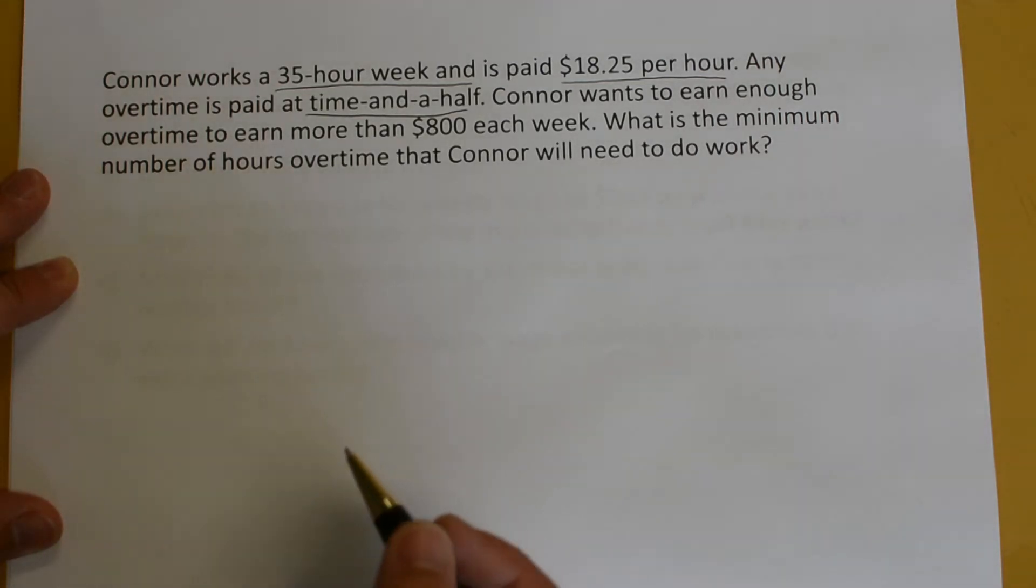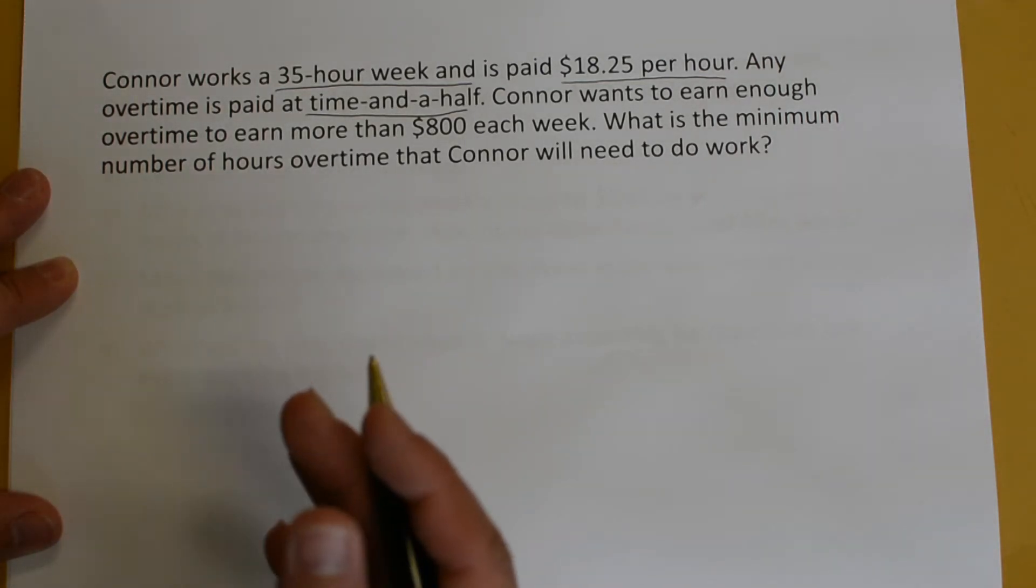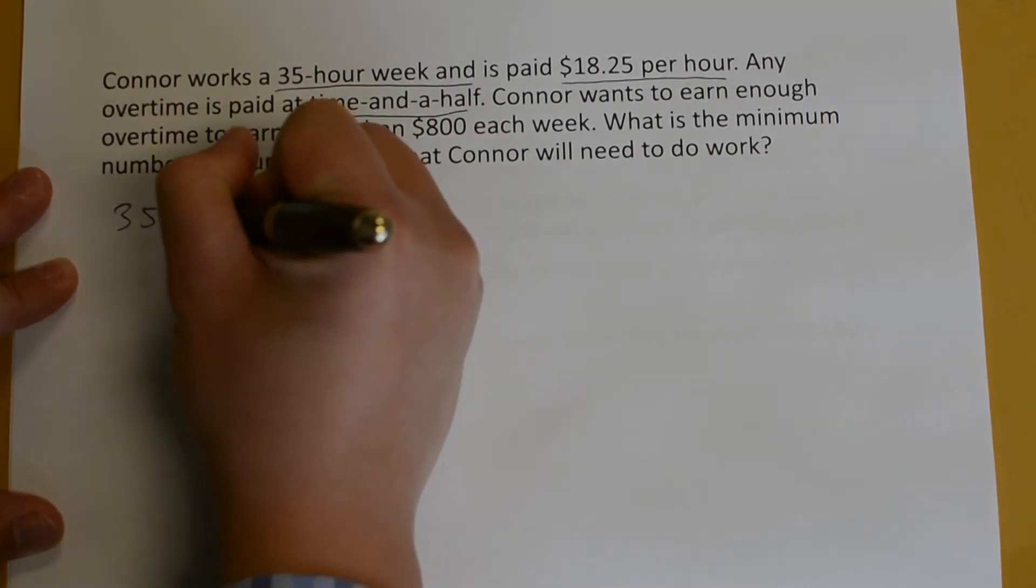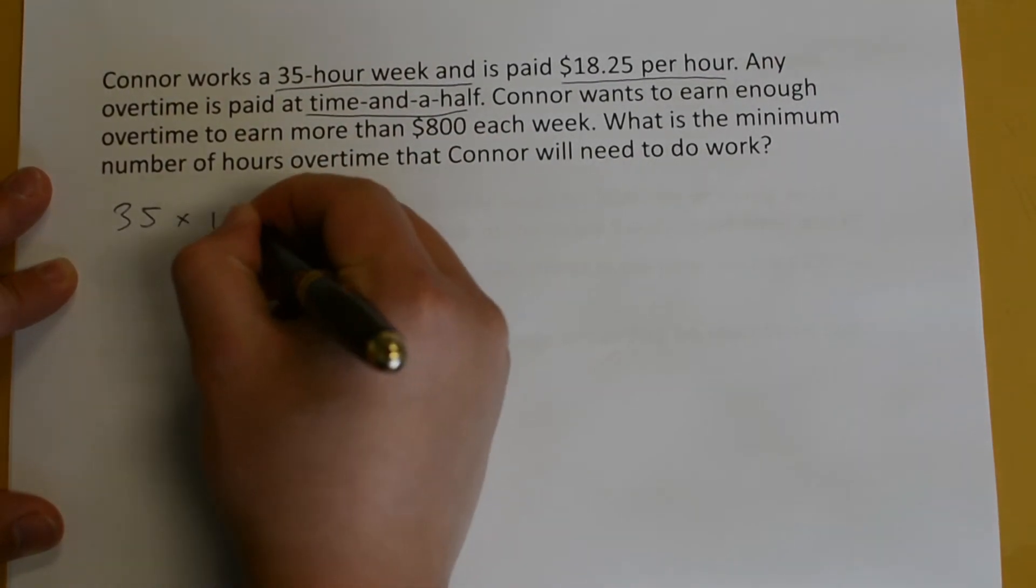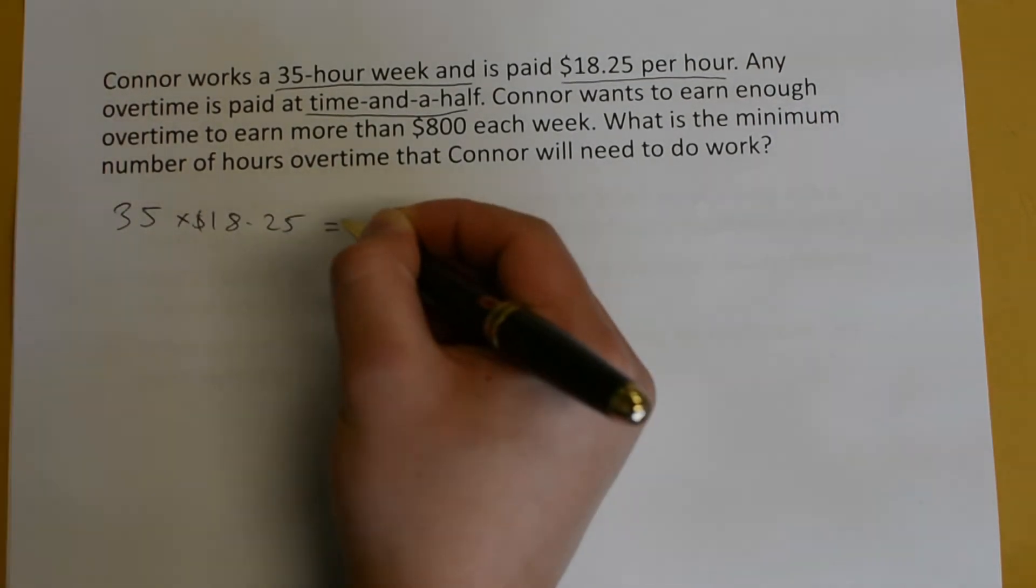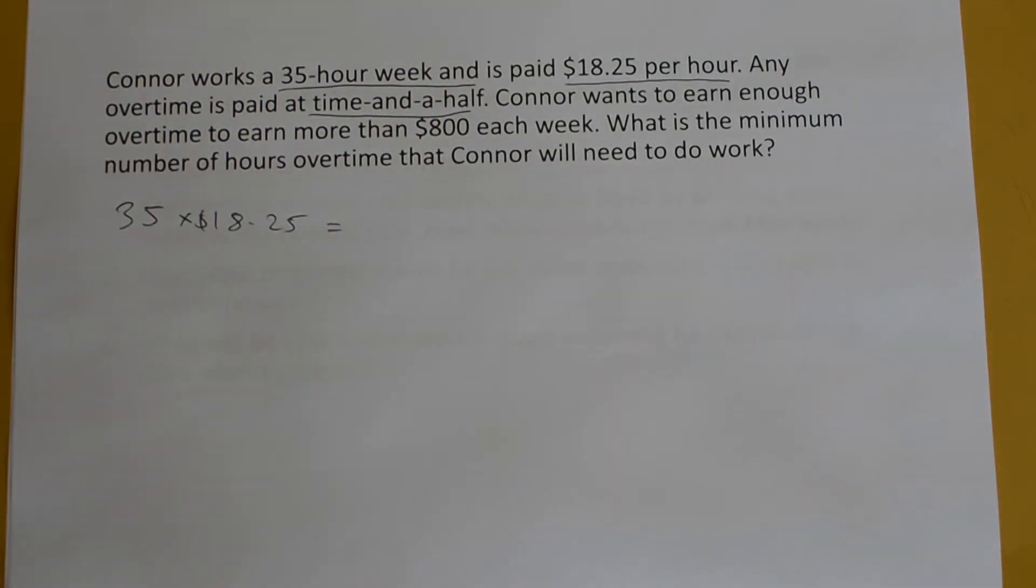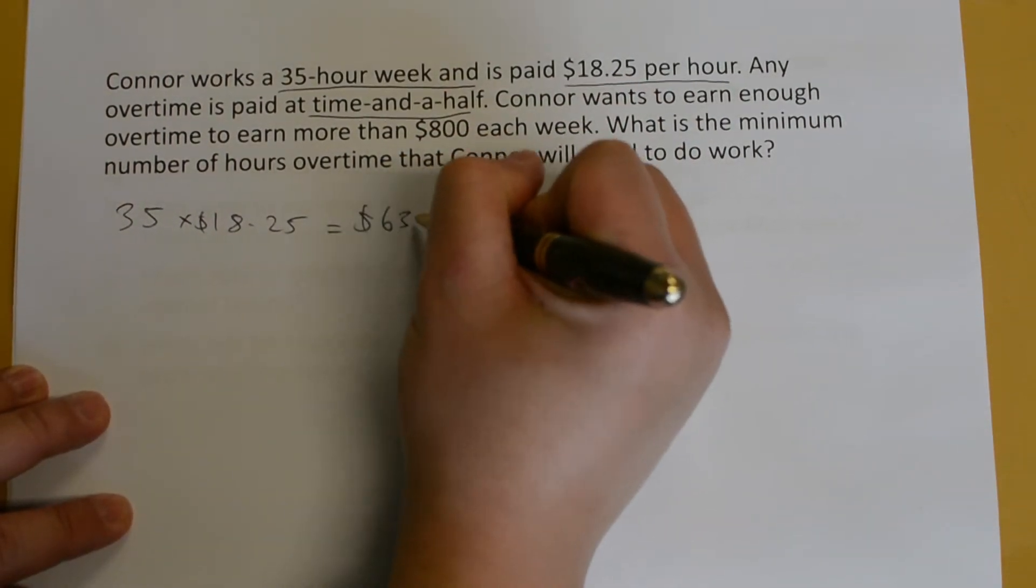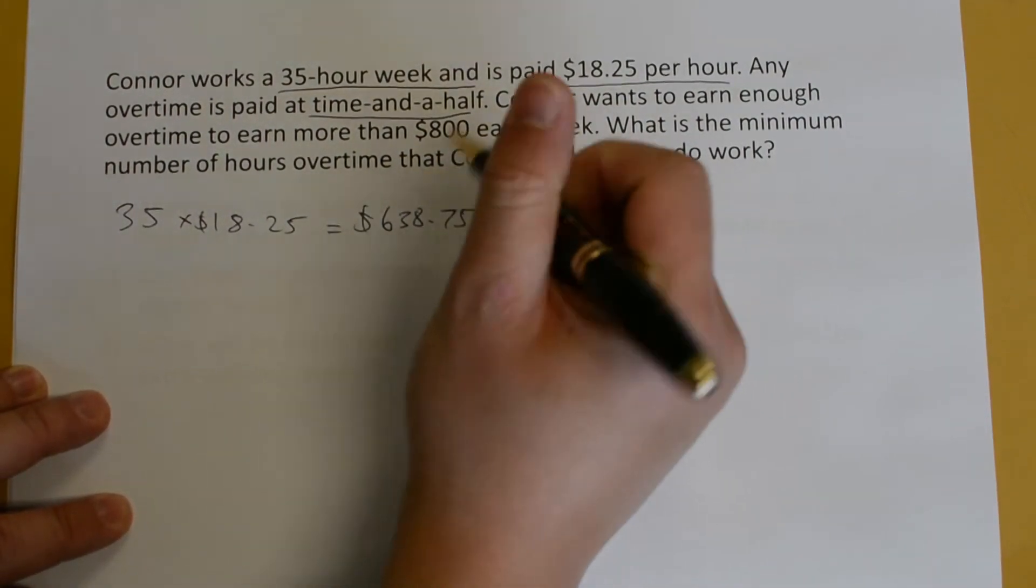We need to first calculate his normal weekly wage. So, 35 hours of working multiplied by his $18.25 will give you his normal wage. On the calculator now, 35 times by 18.25 will give you approximately $638.75.